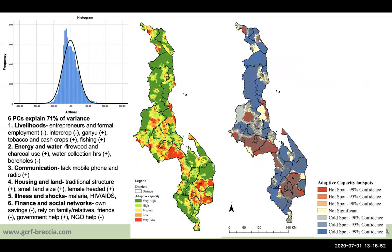Moving on to some of the results — this is from Malawi — first showing the histogram of adaptive capacity, showing a near normal distribution. Then we have six principal components explaining 71 percent of the variance in vulnerability, relating to livelihoods, energy and water, communication, housing and land, illness and shocks, and finance and social networks.